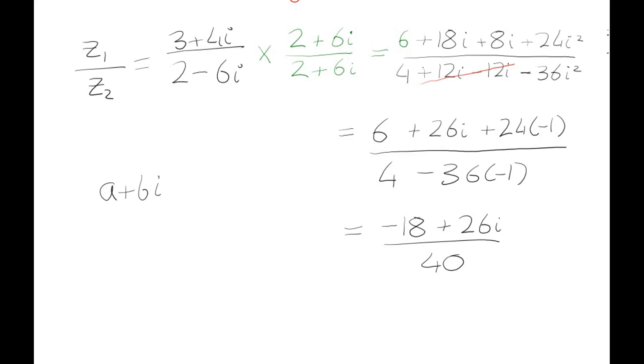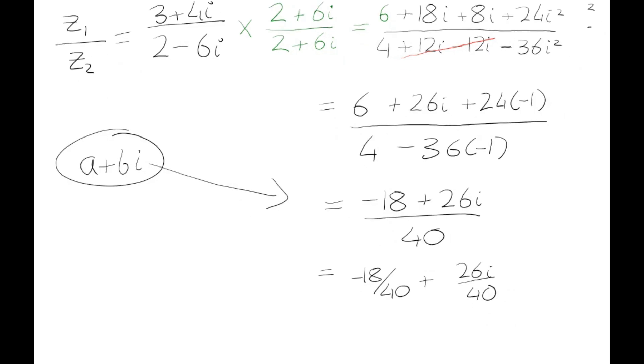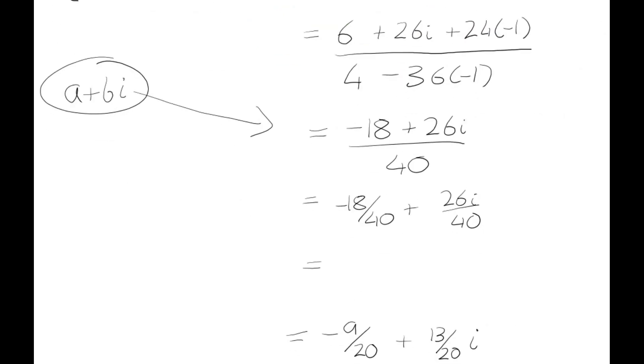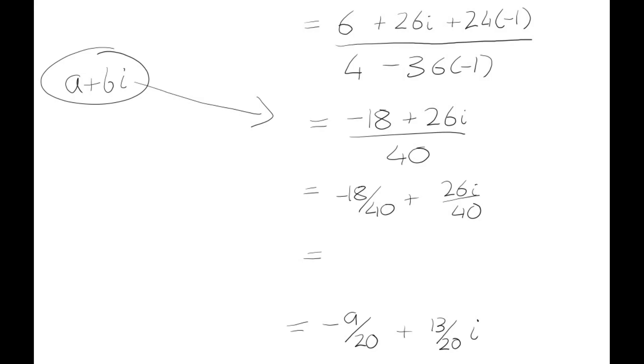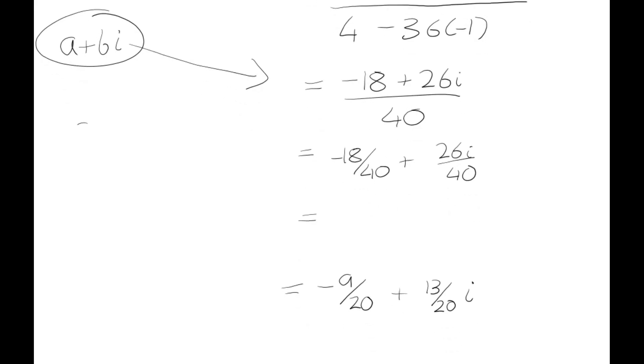What we're going to do is distribute the denominator—it might sound technical but it's really easy. We're just going to split this up: -18/40 + 26i/40. Simplify those fractions and we have -9/20 + 13/20 i, and that's actually your answer.